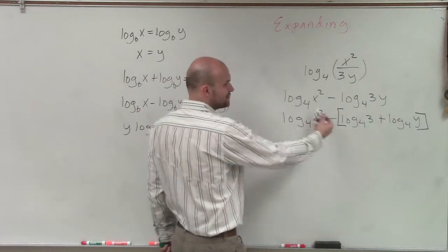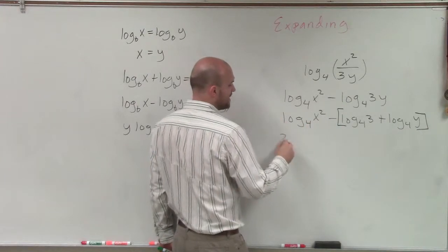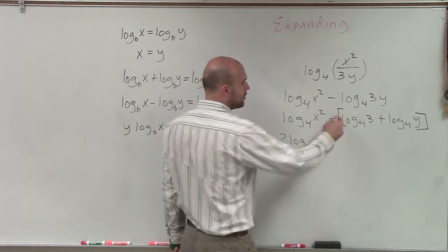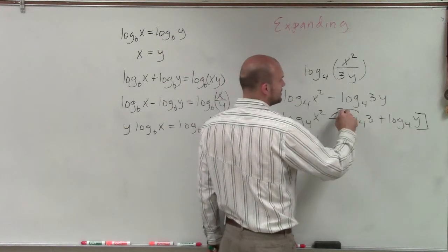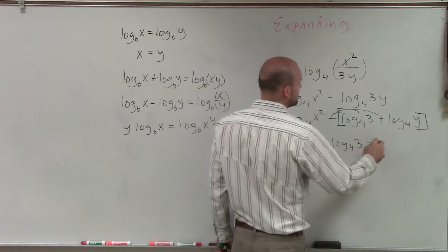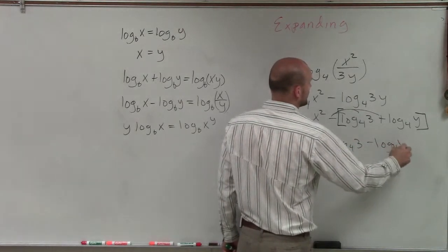Now, the last step. We can rewrite this. Leave it like this. Obviously, you're going to want to bring the two down first. So you can leave this with those parentheses. Or you can apply distributive property to both of these, and rewrite it as log base 4 of 3 minus log base 4 of y.